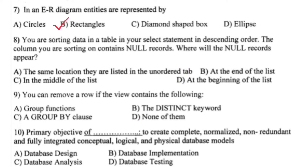The primary objective of dash is to create a complete, normalized, non-redundant and fully integrated conceptual, logical, and physical database model. Write optional B — database implementation.